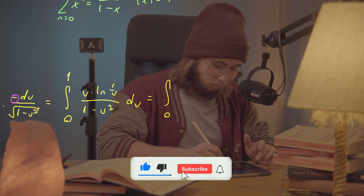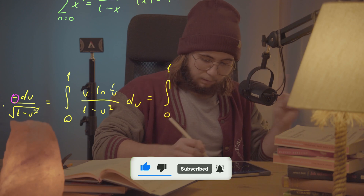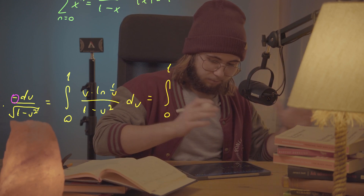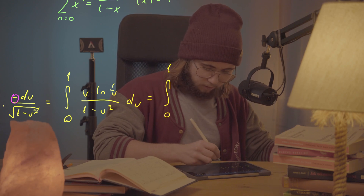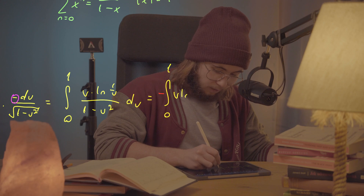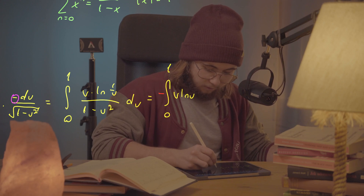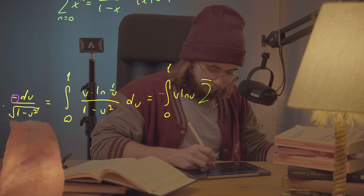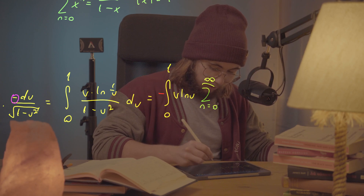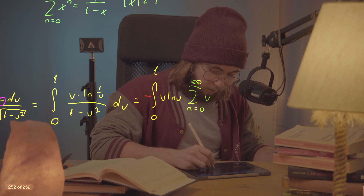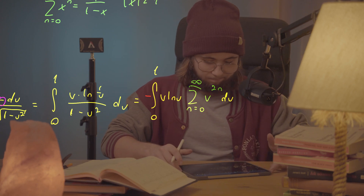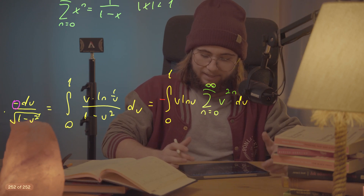Using that power series, I rewrite the integral. Writing ln(1/u) as −ln(u), I get −∫₀¹ u · ln(u) times the sum from n = 0 to ∞ of u^(2n) du, with the du sign at the end.